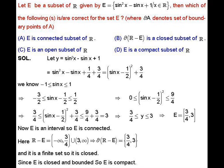We know sinx lies between -1 and 1 for all x in R. Adding -1/2 to this inequality gives -3/2 ≤ sinx - 1/2 ≤ 1/2. Squaring this inequality gives 0 ≤ (sinx - 1/2)² ≤ 9/4. Adding 3/4 throughout gives 3/4 ≤ (sinx - 1/2)² + 3/4 ≤ 3. Therefore y lies between 3/4 and 3, so our set E equals the closed interval [3/4, 3].